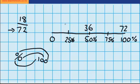Well, I know half of 36 is 18. So you can see from my double number line that 18 out of 72 is the same as 25 out of 100, or 25%.